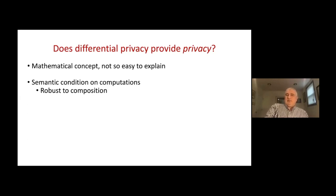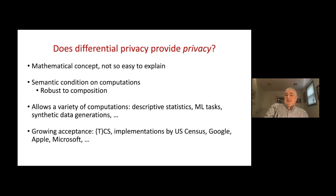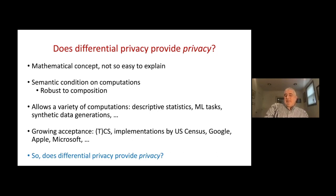Differential privacy is a semantic condition on computations — a green flag for computer scientists — and it's provably robust to composition, unlike k-anonymity. It allows a variety of computations like statistics and machine learning. It gained acceptance first in theoretical computer science, then more broadly, and we're seeing implementations by the U.S. Census and companies like Google, Apple, and Microsoft. But does differential privacy provide privacy? That may not be a fair question, since we never formally defined what privacy is.